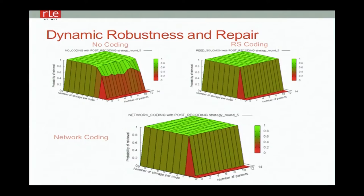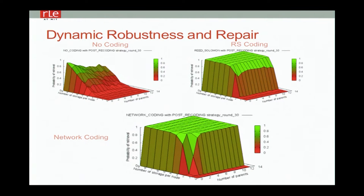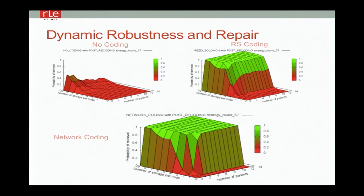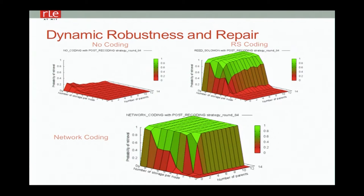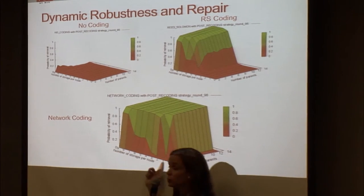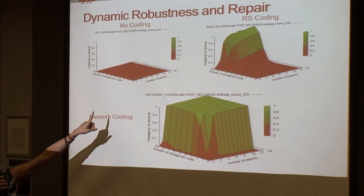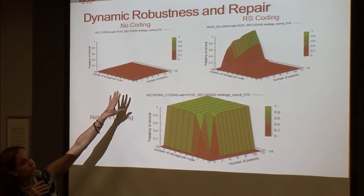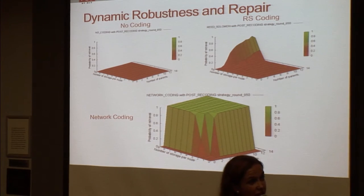We call this affectionately the melting ice cube. The ordinate is probability of retrieval; axes show number of parents you connect to and amount of storage per node. With no coding it's very sad — the worst case. Reed-Solomon valiantly keeps up for a little while, but the thing is doomed. With network coding, as long as you have a little extra storage and connect to enough parents, you have a stable plateau — experimentally a stable plateau. The memory consumption of Reed-Solomon versus random linear code is much, much greater.